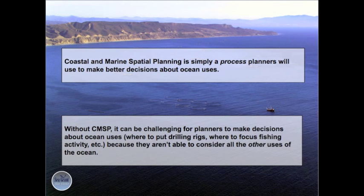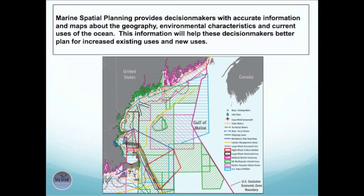Coastal and Marine Spatial Planning is simply a process planners will use to make better decisions about ocean uses. Without CMSP, it can be challenging for planners to make decisions about ocean uses — like where to put drilling rigs or where to focus fishing activity — because they aren't able to consider all the other uses of the ocean. Marine Spatial Planning provides decision makers with accurate information and maps about the geography, environmental characteristics, and current uses of the ocean. This information will help these decision makers better plan for increased existing uses and for new uses.